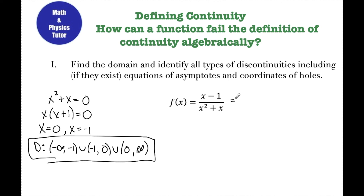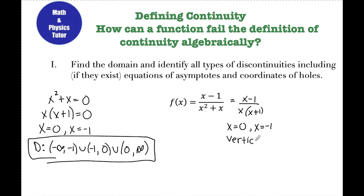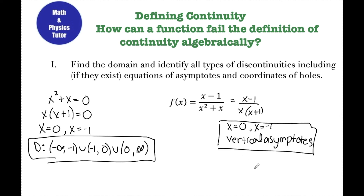Looking at the original function in factored form, I have (x-1) over x(x+1). Since neither factor in the denominator cancels with anything in the numerator, those two factors give me vertical asymptotes at x equals 0 and x equals negative 1. Those are the two discontinuities for this function.